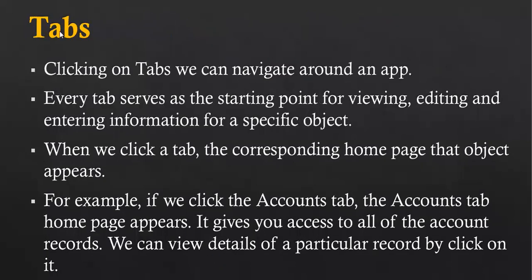Now we are talking about tabs. By clicking on a tab, we can navigate around an app. Every tab serves as the starting point for viewing, editing and entering information for a specific object, so a tab is directly related to an object. When we click a tab, the corresponding homepage of that object appears. For example, clicking the Accounts tab opens the Accounts homepage, giving you access to all account records.